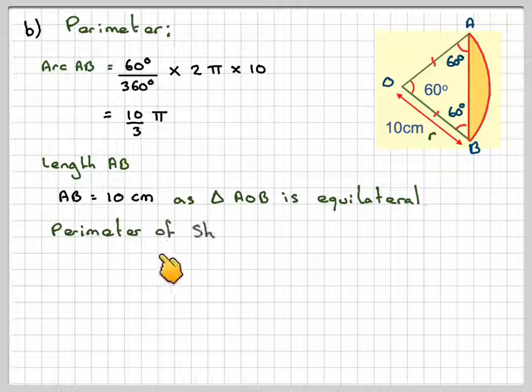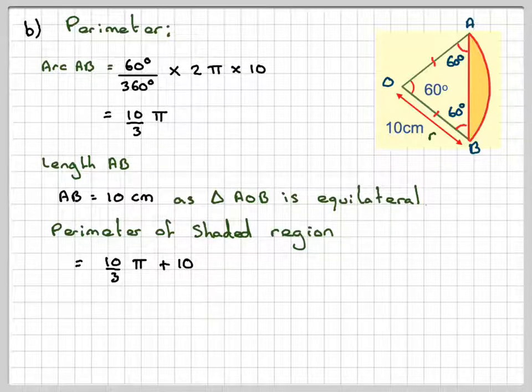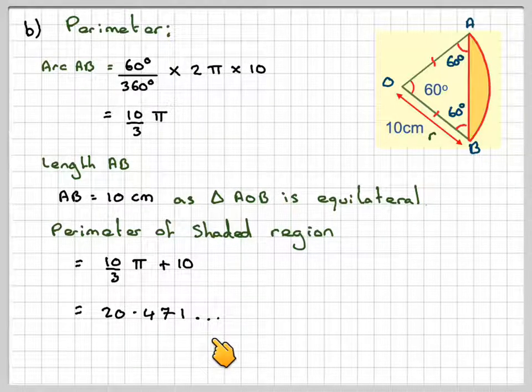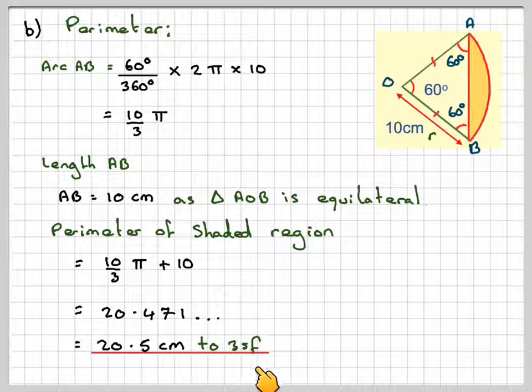Now, the perimeter of the shaded region will be 10 over 3 pi plus 10, and I'll put that into your calculator, just using the fraction button again, which gives you 20.471 when you press the S to D button, and then that gives you 20.5 centimetres to three significant figures. So this has been a video to show you